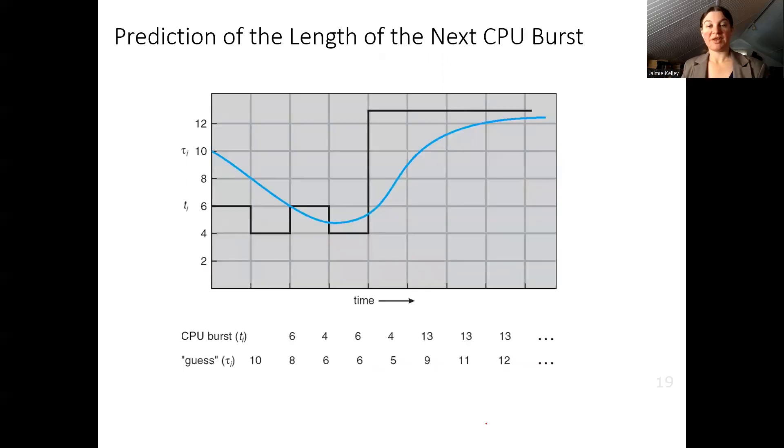Here's an example where we're predicting the length of the next CPU burst. We're using a value of alpha that's 0.5. So if we estimate that our first guess is going to be 10, then we will perhaps see that our first CPU burst is actually 6. So we are using the 10 and the 6 averaged together to get the 8.